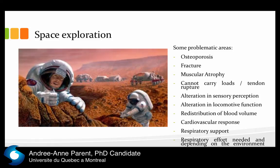Muscle atrophy is the same concern: with a long-duration flight, muscles atrophy, so astronauts cannot carry loads and are at risk of tendon rupture, and the same applies to muscle injury. There is also alteration in sensory perception — the rehabilitation from this alteration is relatively short, but you must consider it because they experience altered locomotor function. If your exoskeleton is designed around normal human locomotion, it may not function the same way on Mars. Also consider redistribution of blood volume — the rehabilitation is short compared to osteoporosis or muscular atrophy, but with a heavy workday, the cardiovascular response may be very challenging.